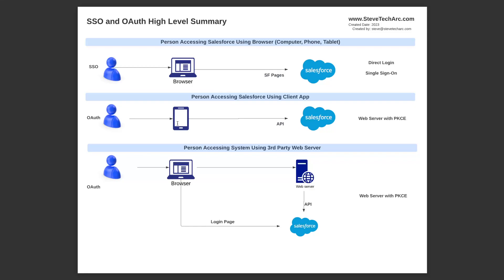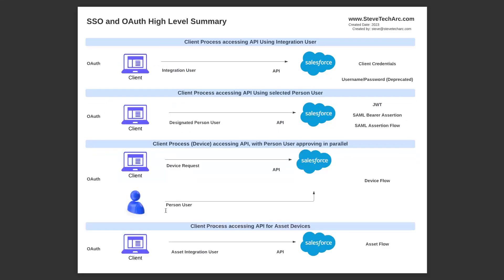We also talked about a human user using a browser to a third-party website, and then the third-party website accessing Salesforce data. But in this situation the human is available, we can redirect them to a login page, and we can have the web server acting on their behalf. Now there may be a time where we have a client — meaning not a human, but a server acting as a client — and it might just need to have a single user, an integration user. In that case, it may have direct client credentials, username and password.